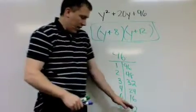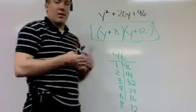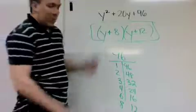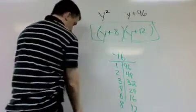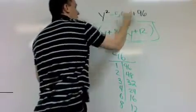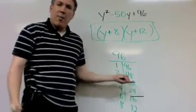Now sometimes these numbers might have to be negative, both negative in order for it to work. Because you might need this number in the middle. We'll change it real quick. 2 and 48 make positive 50.